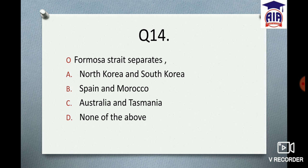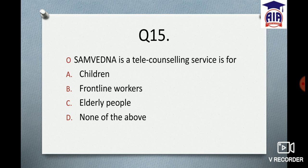Next question: The Formosa Strait separates which pair? Option A: North Korea and South Korea. Option B: Spain and Morocco. Option C: Australia. Option D: None of the above. When we cover straits, this will also be covered in revision.